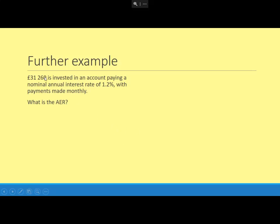£31,260 invested in an account paying a nominal annual interest rate of 1.2%, with payments being made monthly. What's the AER? So that's the formula we're using, the AER formula. You don't have to use this formula; you can work it through like we did before if you're comfortable doing that. This is the shortest and quickest method there.